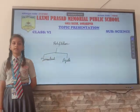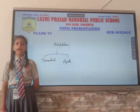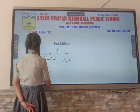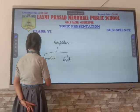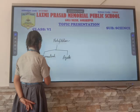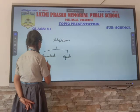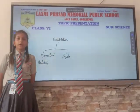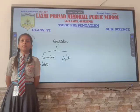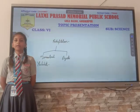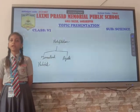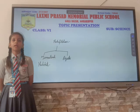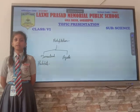Next, the topic is habitat. A place where plants and animals live together is called habitat. There are two types of habitat: terrestrial and aquatic.